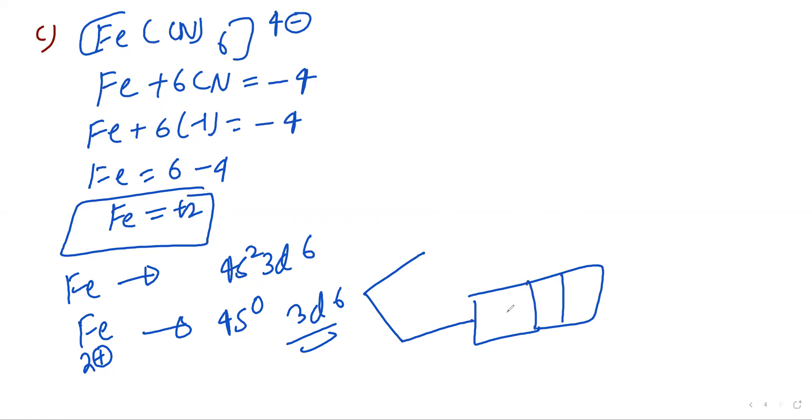One, two, three, four, five, six. No unpaired electrons. Zero. So mu is zero for this Fe(CN)6 4 minus. Now see the next.